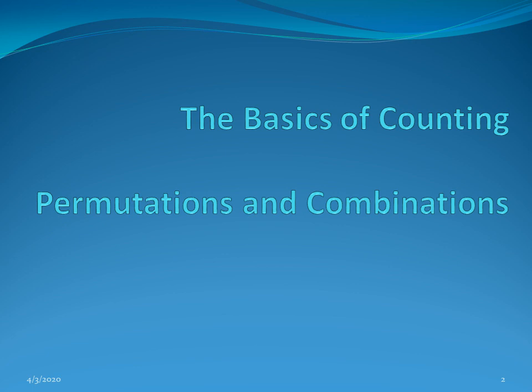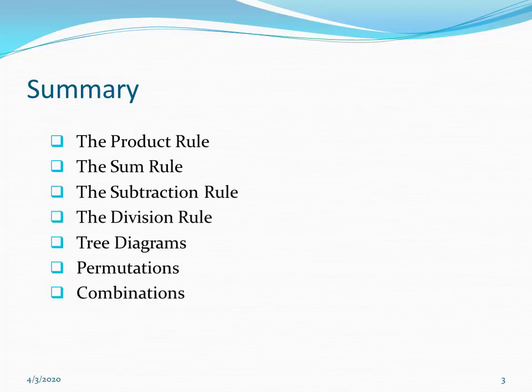In this chapter we will study the basics of counting and many formulas to enable us to count. Toward the end of the chapter we will see how we can count permutations and combinations. The rules we will cover: we will start by studying the product rule, then the sum rule, the subtraction rule, the division rule, and then tree diagrams. In the last two topics we will study permutations and combinations.